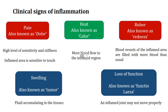There are a total of five clinical signs of inflammation, also known as dolor, rubor, calor, tumor, and functio laesa. Let us first understand what is dolor. Dolor means pain. There is a high level of sensitivity and stiffness in the area that is inflamed, so it is too sensitive to even touch and you will experience pain at that particular region.